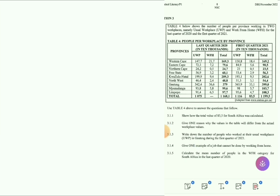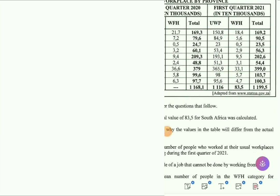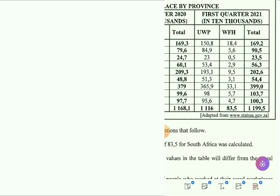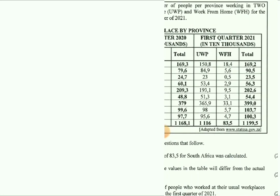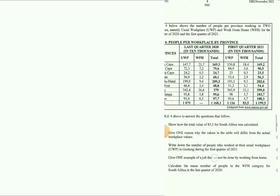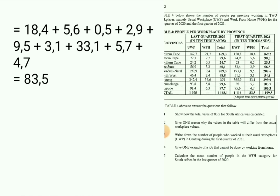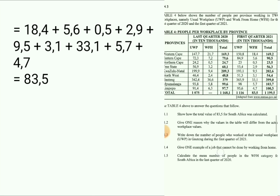Now let's answer the questions. Question 3.1.1: Show how the total value of 83.5 for South Africa was calculated. I think everyone will get this right because it's straightforward. As you can see, 83.5 is on the table. It was calculated by adding all the WFH numbers: 18.4, 5.6, 0.5, 2.9, 9.5, 3.1, 33.1, 5.7, and 4.7 — then you get 83.5.